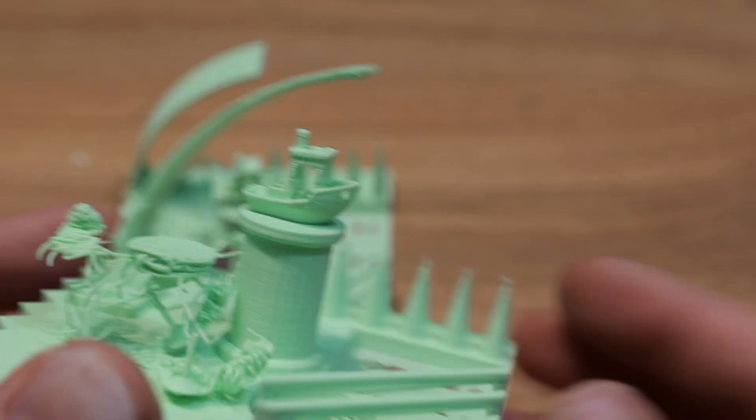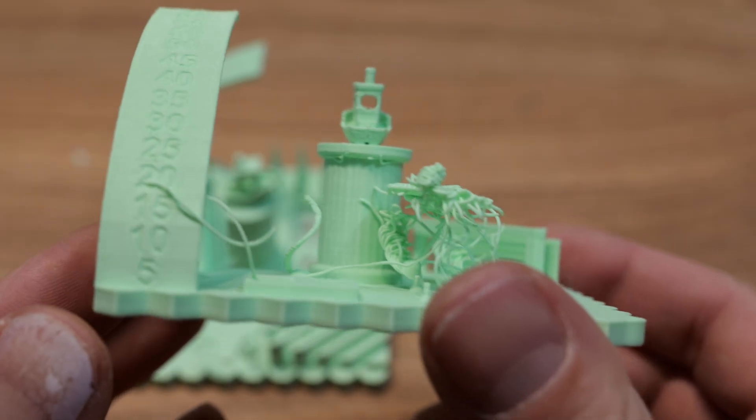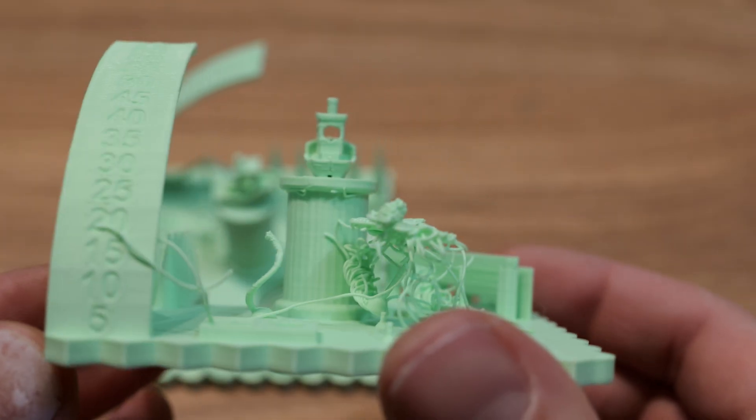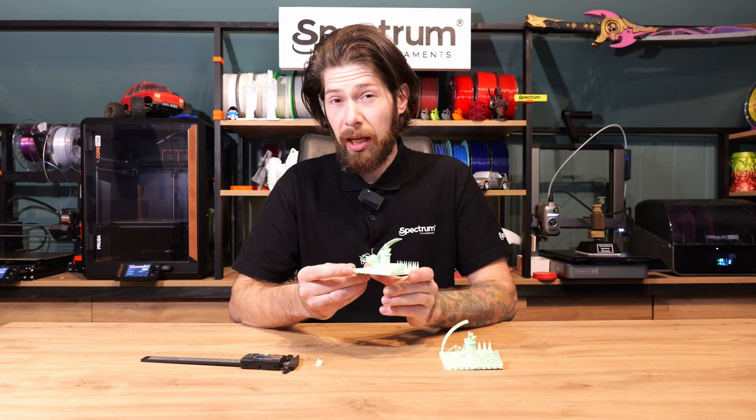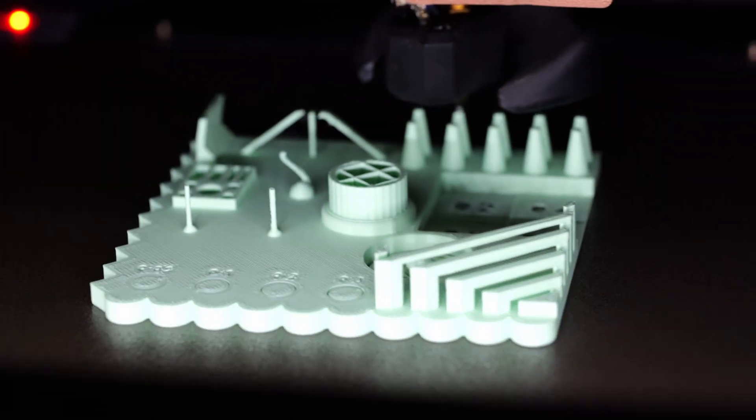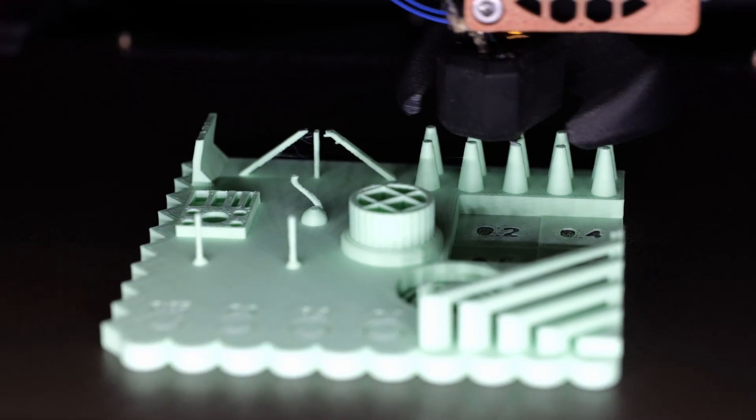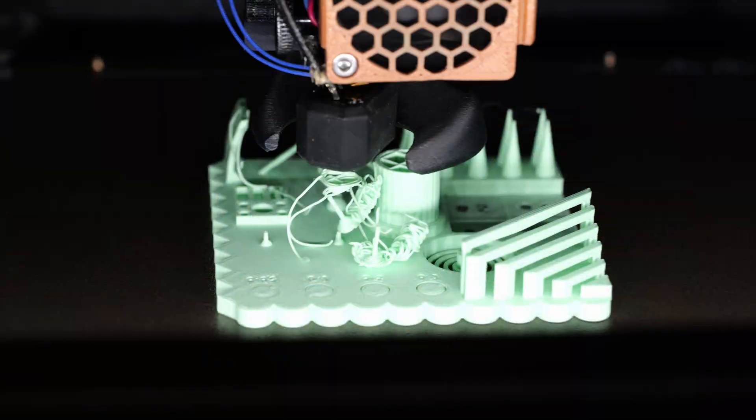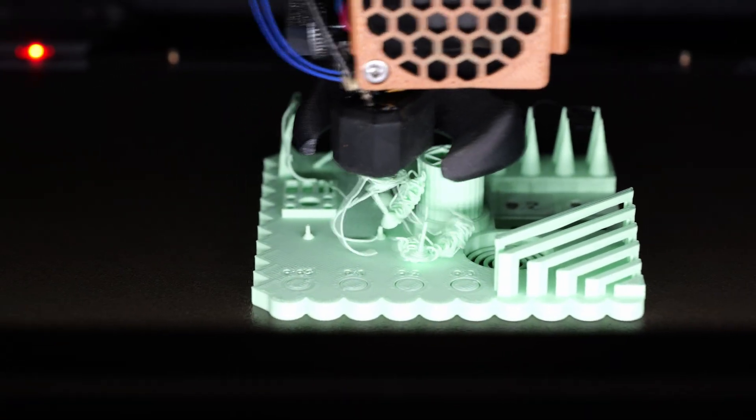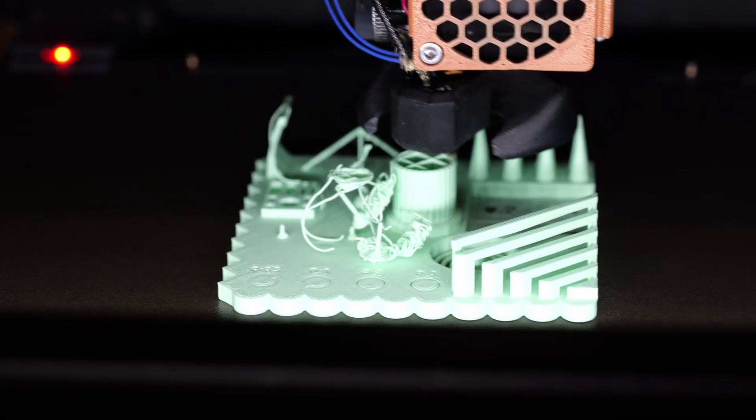As you can see the pin test also failed but it failed somewhere on the end when we started to print the ball and the cocktail. So probably I will guess it was just wrong temperature and speed or maybe retraction, then the nozzle didn't lift before the retraction and changing the place. So maybe this was the issue but nevertheless it also failed.